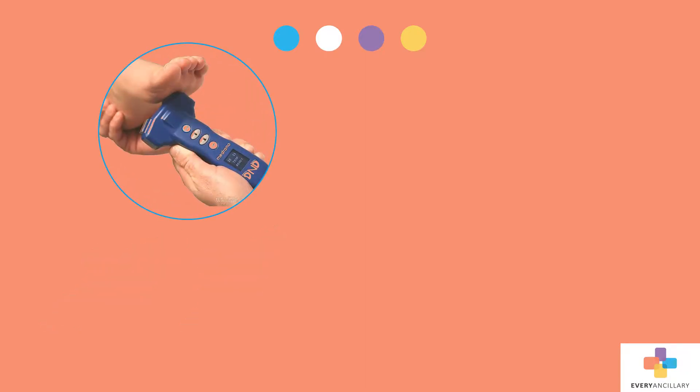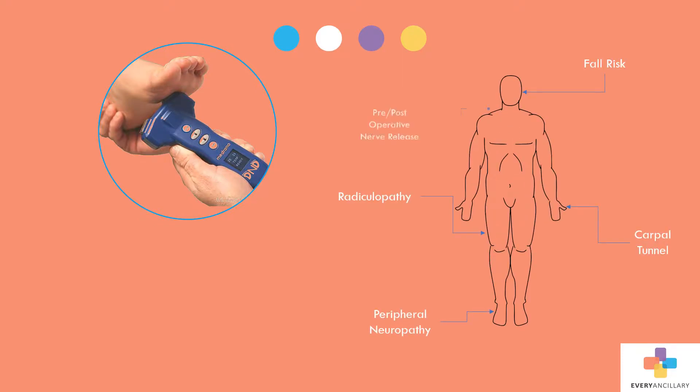The device helps test for peripheral neuropathy, carpal tunnel, fall risk, radiculopathy, and pre- and post-operative nerve release procedures. The device aids in early detection of loss of protective sensation that can occur insidiously with neuropathy progression.